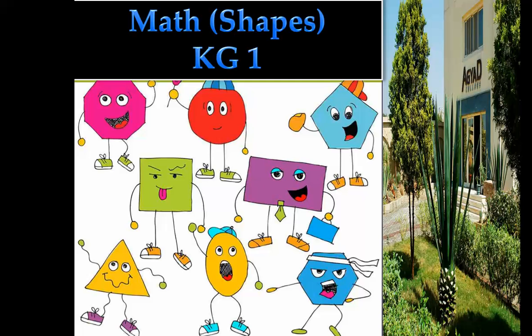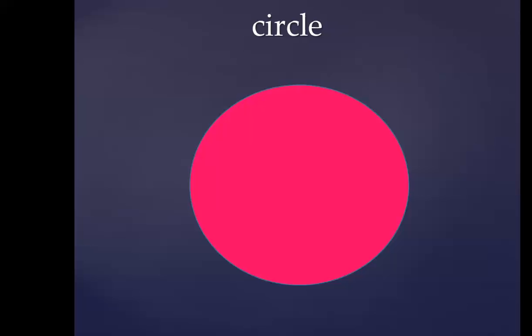Let's start. What's the shape KG1? This is a circle. Say circle. Very good! Do you remember the song of the circle? Let's sing it all together. One, two, three: it goes round and round and can be found, it goes round and round and can be found. It's a circle! Very good!